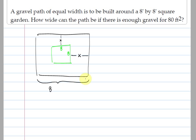And we've let x equal the width of the garden, so the length of this whole thing, this whole length, can be represented by 8 plus x plus x to represent the width of the path on both sides. And that simplifies to 8 plus 2x.